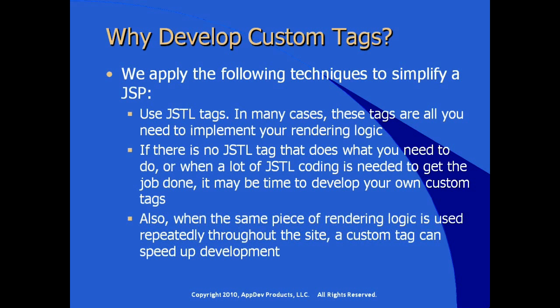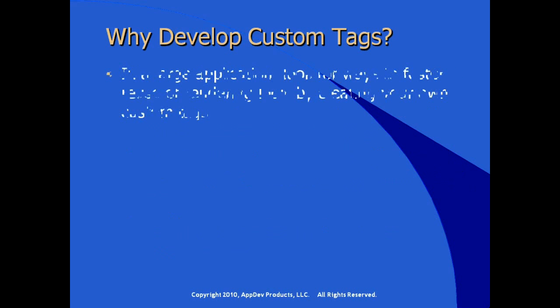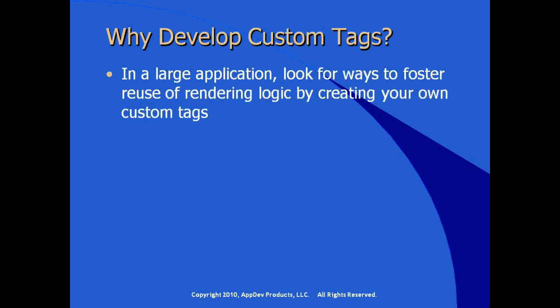Most importantly, to further the reuse of our code, when the same piece of rendering logic is used repeatedly throughout a site — across multiple JSPs in the view layer — a custom tag can speed up development. In a large application, you should be looking for ways to foster the reuse of rendering logic by creating your own custom tag and centralizing and abstracting pieces of common functionality throughout your application or architecture.